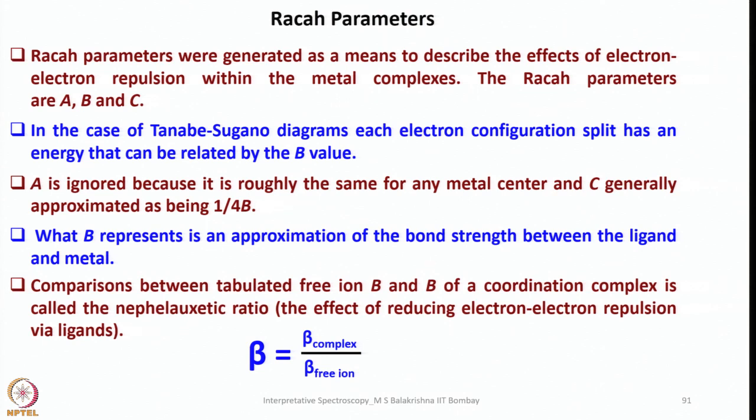Now let us come back to Racah parameters. Racah parameters were generated as a means to describe the effect of electron-electron repulsion within the metal complexes. The Racah parameters are A, B, and C. In the case of Tanabe-Sugano diagrams, I will tell you what is Tanabe-Sugano diagrams. We learned about Orgel diagrams. We have another set of diagrams called Tanabe-Sugano diagrams. In Tanabe-Sugano diagrams, each electron configuration split has an energy that can be related by the B value.